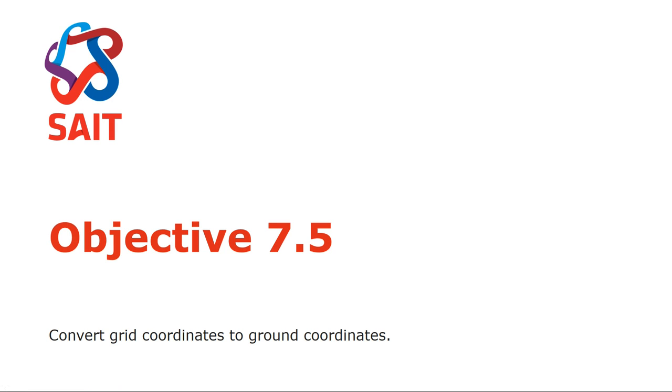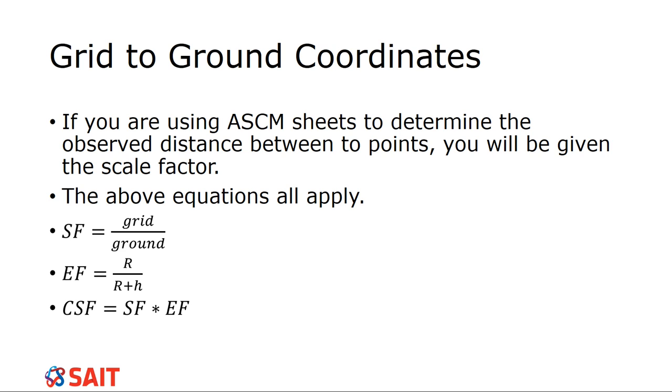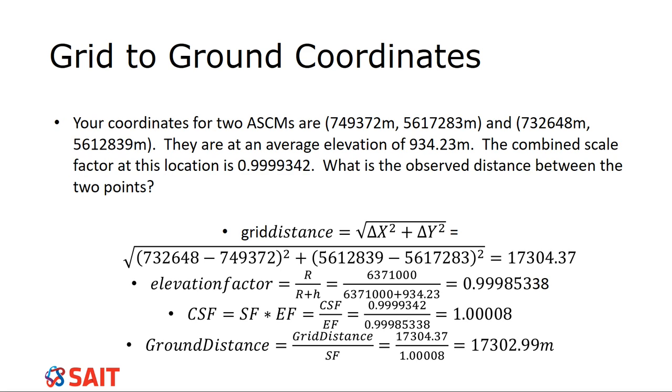As I said, I was going to cover the two objectives. We're going to move into actually looking at coordinates and not so much the coordinates themselves, but the measurements themselves. It's kind of moving around those three equations that I just taught. Objective 7.5 is grid coordinates to ground coordinates. If you're using ASCM sheets, you are given the scale factor and then you can use the equations that I have given you there. For example, here, this is a third example. Your coordinates on two ASCM sheets are in UTM coordinates. I can tell that just by looking at the numbers and we will talk about that in the next objective in the next video.